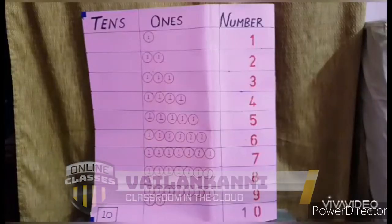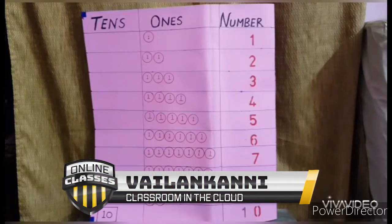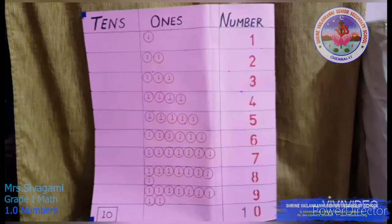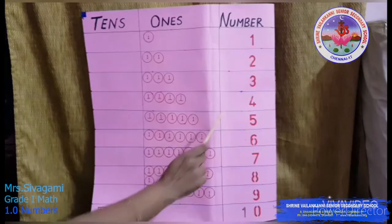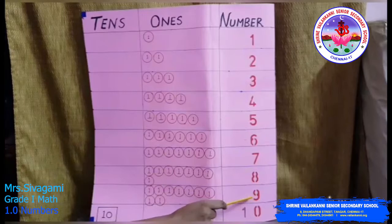Good morning children, today we are going to see a new chapter: numbers up to 20. First, we shall have a short recap on numbers. For numbers 1 to 10, you can see that numbers 1 to 9 are single digit numbers.